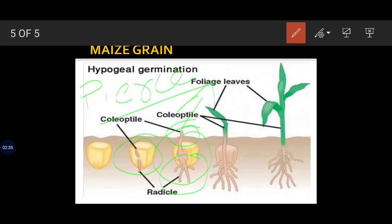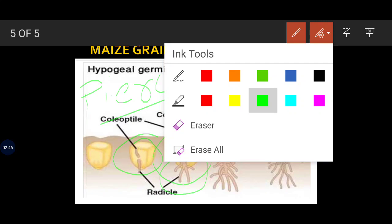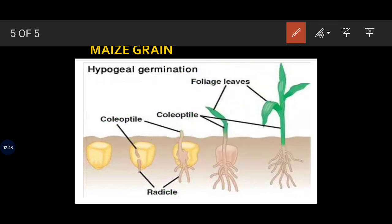The plumule peers out through the coleoptile and slowly develops foliate leaves. This diagram clearly shows the picture representation of how hypogeal germination takes place in maize grain.